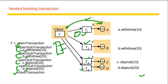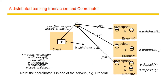One thing we have to understand is how these distributed transactions can be maintained. Servers that execute requests as part of a distributed transaction need to be able to communicate with one another to coordinate their actions when the transaction commits. A client starts a transaction with an open transaction command and closes it with a close transaction command. In between, it will perform the operations.